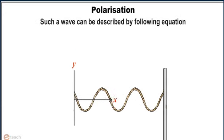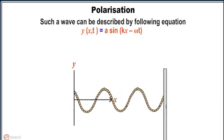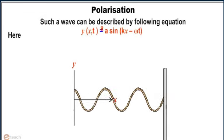Such a wave can be described by the following equation: y in terms of x, t equals a sin kx minus omega t.